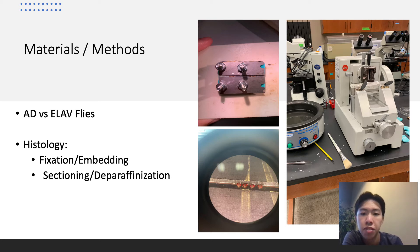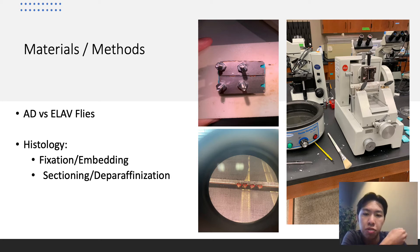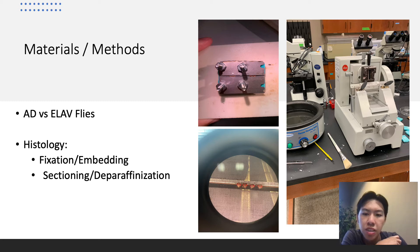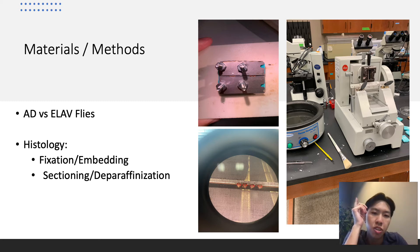After fixation was completed, we began our embedding process, which would take the sample through multiple rounds of dehydration using ethanol, followed by submission into two changes of toluene before being left in melted paraffin overnight. By the next day, the samples are ready to be prepared and sectioned using that green machine in the third image.